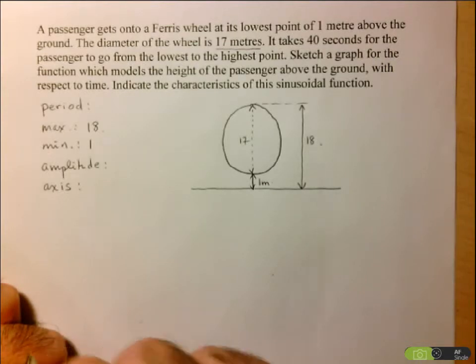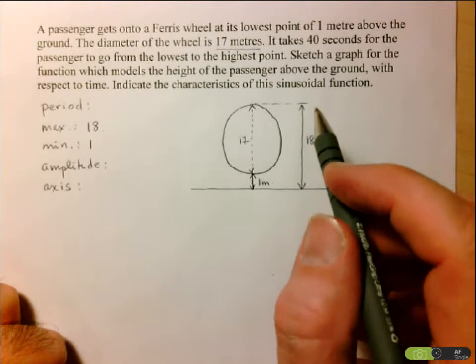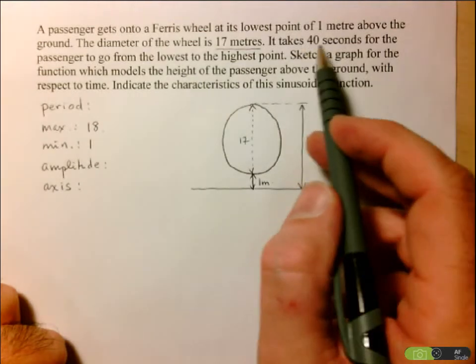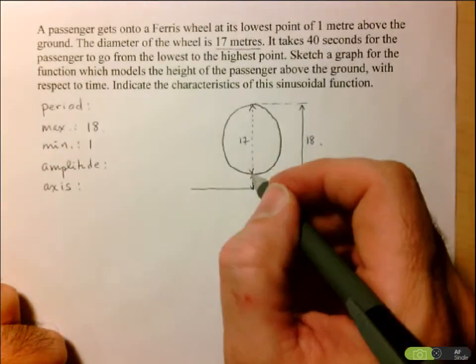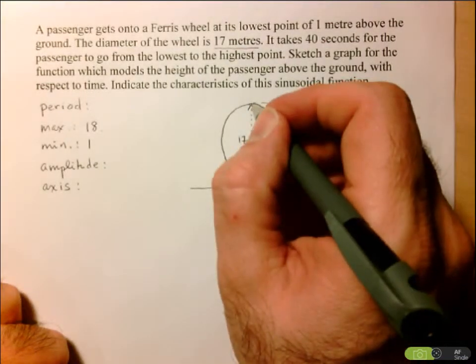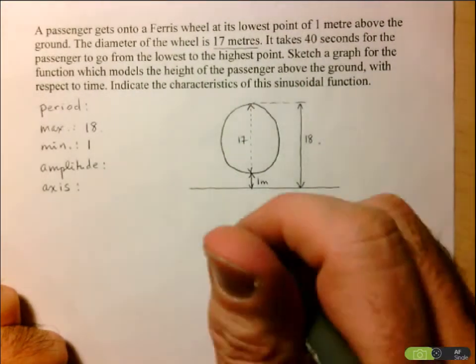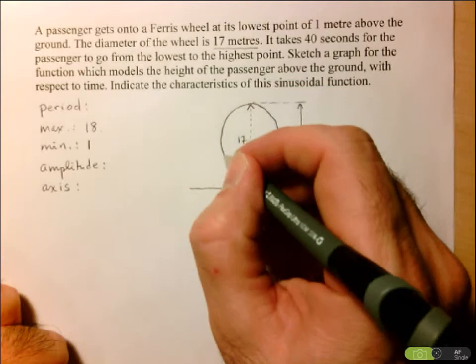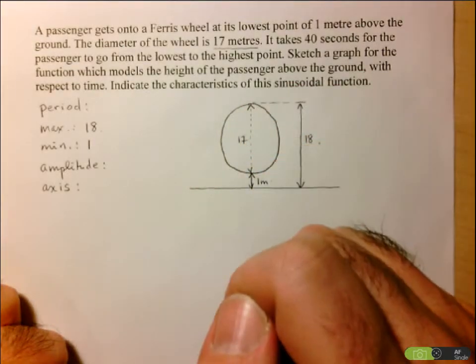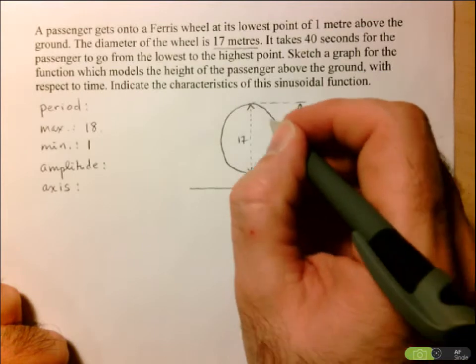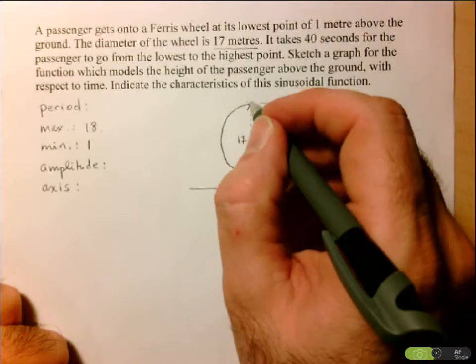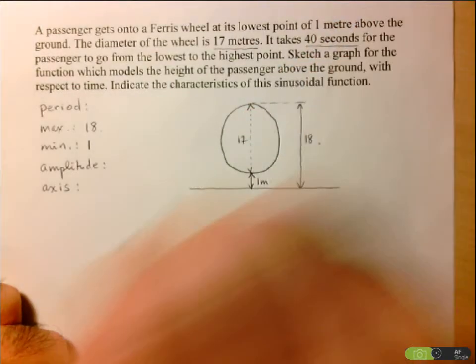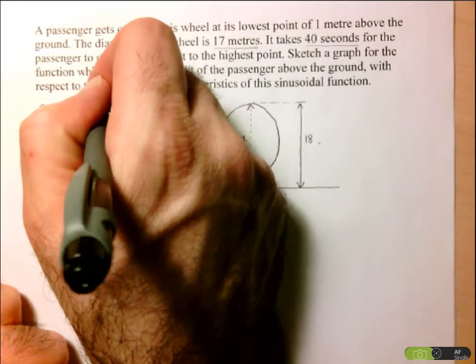Now let's talk about the period here. This is where we have to be careful because it might be tempting to just say the period is 40 seconds. It's really important to read the question carefully. It says it takes 40 seconds for the passenger to go from the lowest point to the highest point. But that does not include a whole period. A whole period would include going from the bottom to the top and then coming back to the initial position at the bottom. So what they've given us is only half the period to go from the minimum to the maximum. But then we've got the other half to go from the maximum back to the minimum. So you've got to be very careful here because the period is not 40, it's in fact 80 seconds.